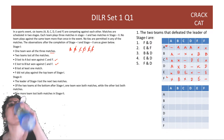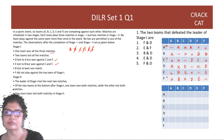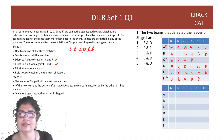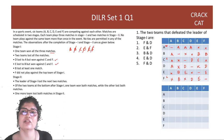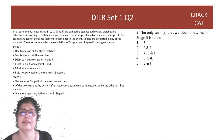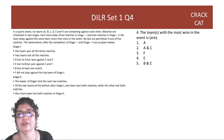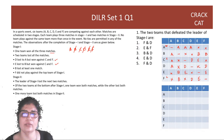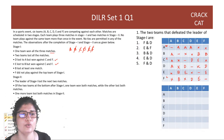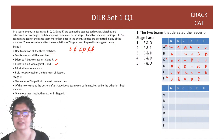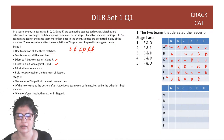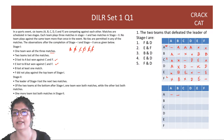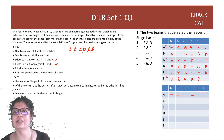Now we look at stage 2 in a second table. In stage 2: A plays E and F; B plays C and D; C plays B and F; D plays B and E; E plays A and D; F plays A and C. We mark out what was already done in stage 1 and focus on what's left.